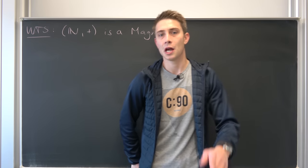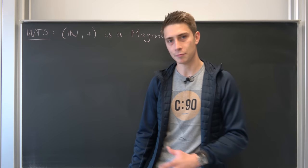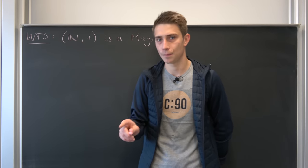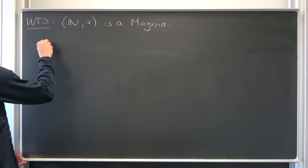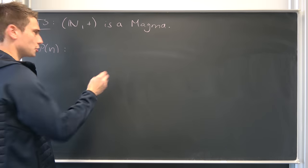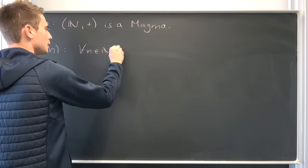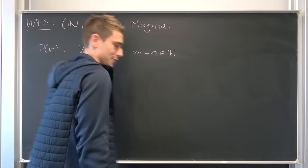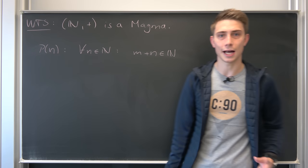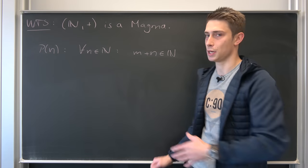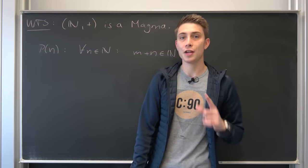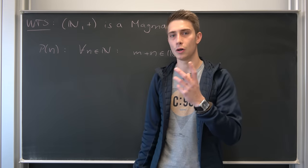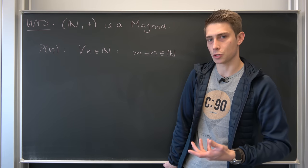So before getting really started remember what it means for something to be magma. What we want to show is that the natural numbers are closed under addition. Meaning if we define a certain proposition P(n) we want to show that for all n element of natural numbers we have that m plus n is once again element of natural numbers. That's just a basic definition of closure under addition on natural numbers. And we want this m to be a fixed but arbitrary natural number. It doesn't depend on m. n is our variable we are going to do induction on.